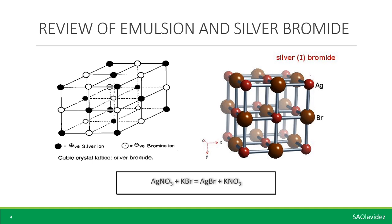The bromide becomes negatively charged because it now has an excess of one negatively charged electron — it is called a bromine ion. Their charges cause them to be attracted to each other, forming what is known as an ionic bond. This ionic bond creates what is called a cubical crystal lattice formation. However, in silver halide crystal, this lattice formation is not perfect. There are imperfections in the crystal caused by impurities from the gelatin, which is the binder of the crystal.